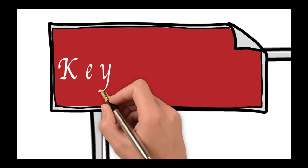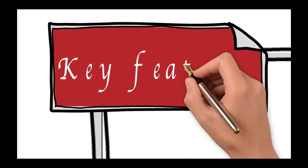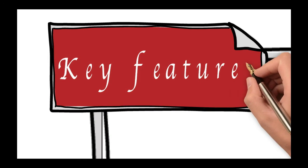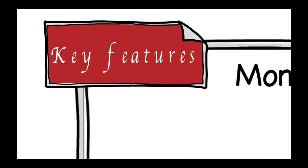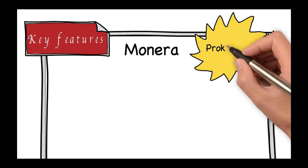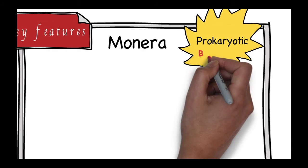The first kingdom is the Monera kingdom, and it's very important that you can list some key features. What do organisms have to have to fit into the Monera kingdom? Well, firstly, they have to be prokaryotic, and the only organisms we know that are prokaryotic are bacteria.